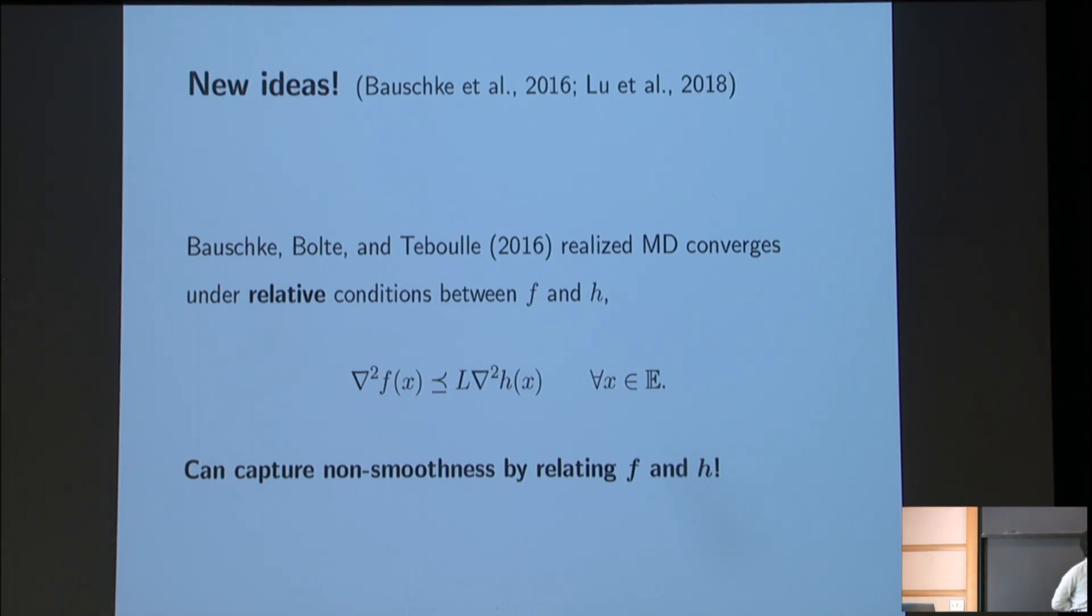Baushke, Bolte and Teboulle in 2016 realized that mirror descent can be shown to converge simply under the relative conditions between the function that we're interested in and this designed reference function. So the only, among some other technical conditions, but the sort of real meat of the proof, relies on the Hessian of F being upper bounded by some positive multiple of the Hessian of H in the partial order of positive semidefinite matrices. And the key point is that this can capture non-smoothness in both F and H simply by relating them through this relationship.